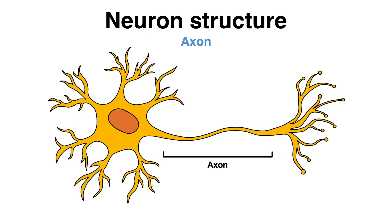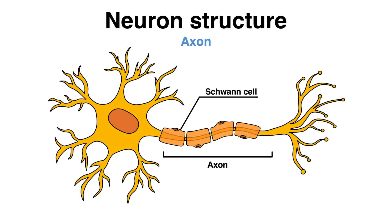The axon is covered at regular intervals by so-called Schwann cells. Along the axon, the Schwann cells produce an insulating substance known as myelin. Myelin sheaths are fatty layers encircling the axon, which also prevent the presence of ion channels in these regions.